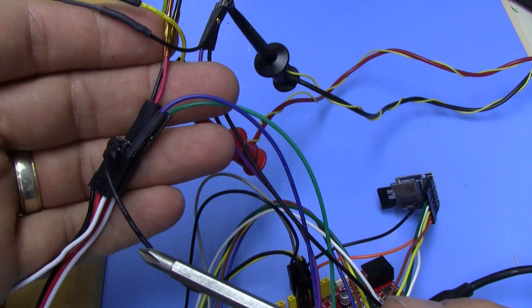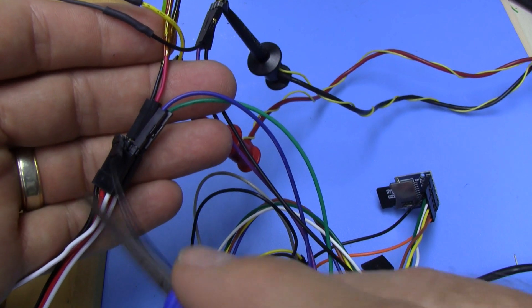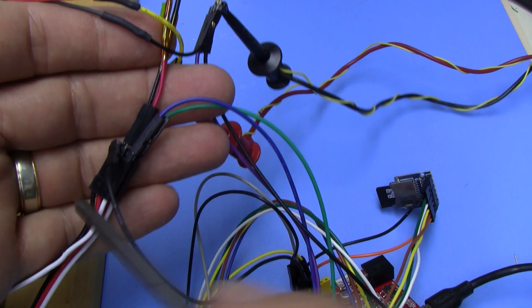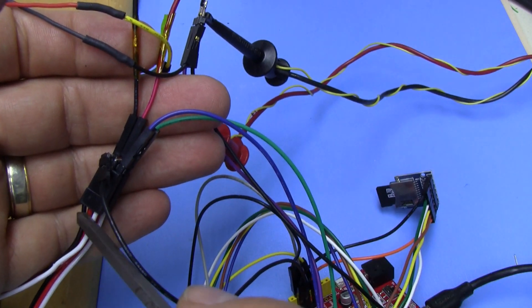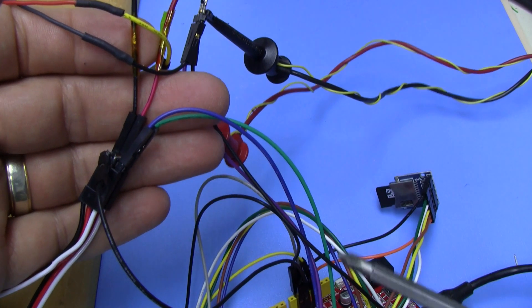This black wire is ground to the C-Duino and also goes to the black wires on the servos. And it also goes to the black wire on the external bench supply.